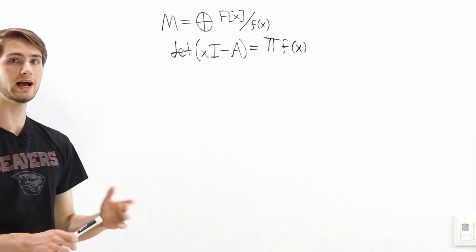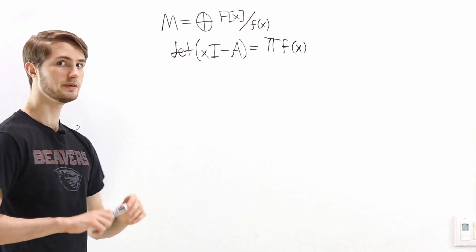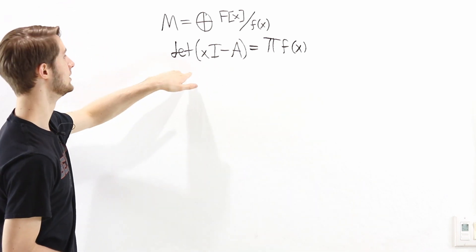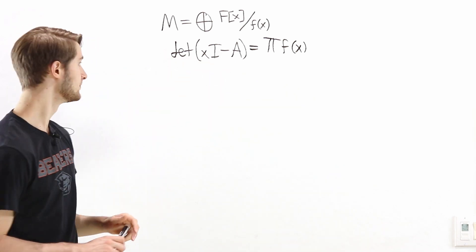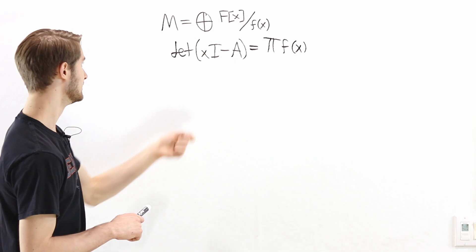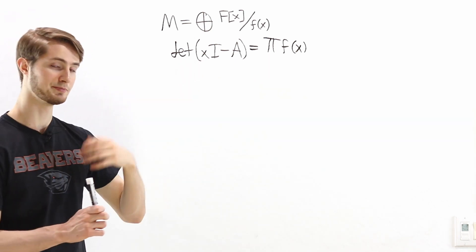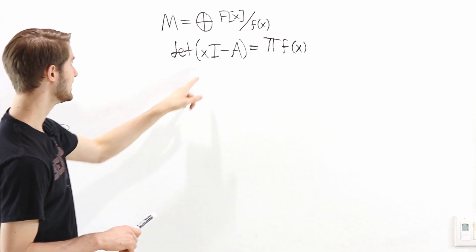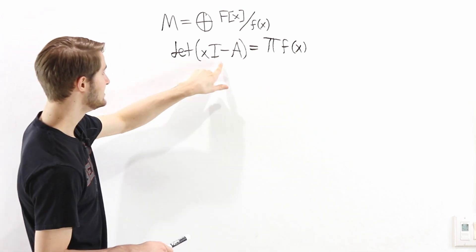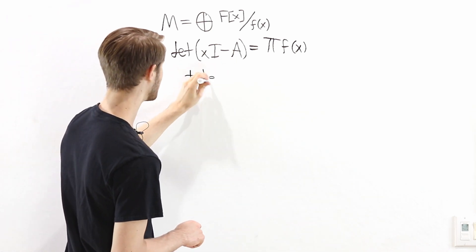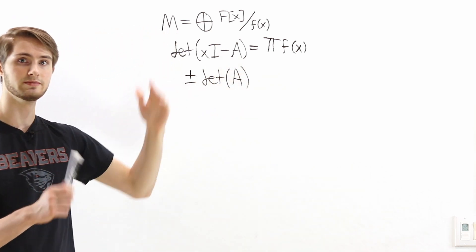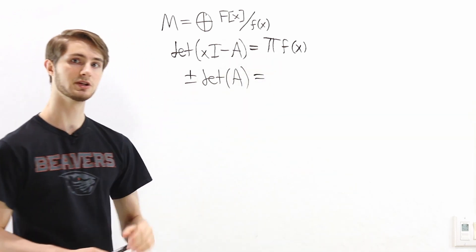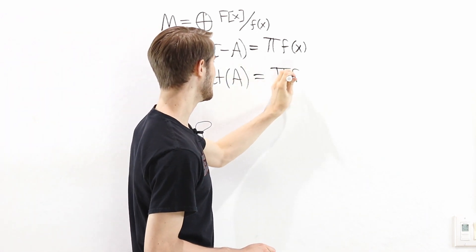In particular, I want to ask what happens if we plug in x equals zero. When we plug in x equals zero, that's the same as taking the determinant of 0·I minus A, which gives us the determinant of negative A. That's going to be plus or minus the determinant of A, where the sign depends on whether the matrix is n by n with n even or n odd. On the other side, plugging in x equals zero gives us the product of f(0).